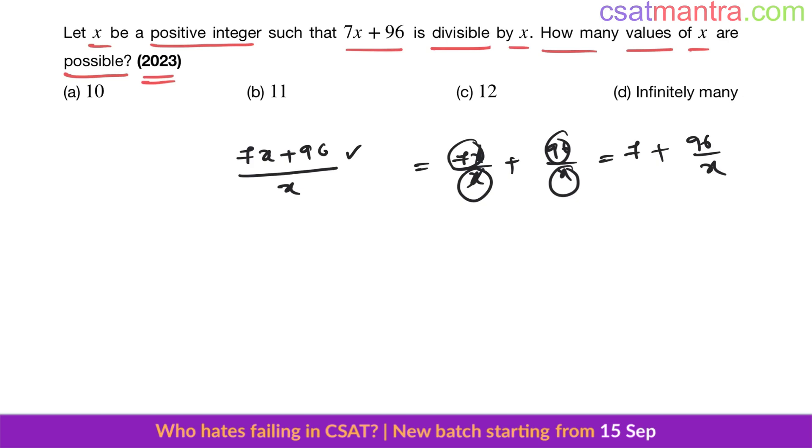7x is divisible by x. Now 96 should be divisible by x, then only we can say 7x plus 96 is divisible by x. We got an integer here, and we should also get an integer here. When a number is divisible by another number, integer plus integer gives an integer. So x should be a factor of 96.